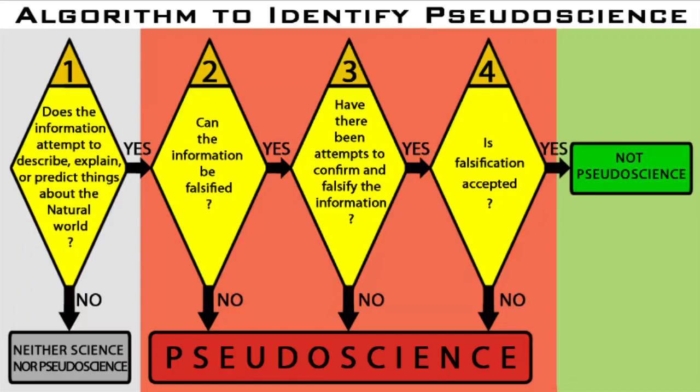Not accepting falsification also involves maintaining the same old information and ignoring the information which falsifies or disproves it. This fourth question covers the demarcation criterion expressed by post-positivism.